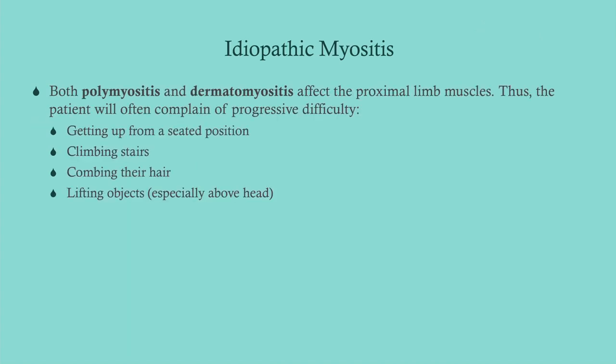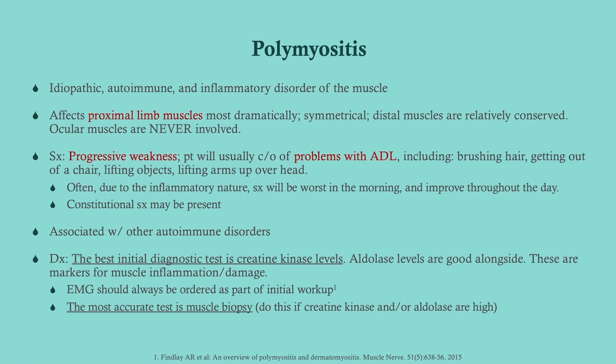Both polymyositis and dermatomyositis affect the proximal limb muscles. Patients will have difficulty getting up from a seated position, climbing stairs, or combing their hair — those shoulder muscles are needed to get your hand over your head. These are symptoms of proximal muscle weakness that significantly interfere with quality of life. Symptoms include progressive weakness and problems with activities of daily life. Because this is inflammatory, symptoms may be worse in the morning and improve throughout the day.